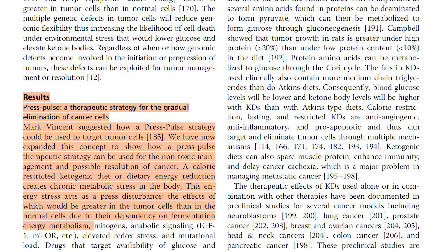Press Pulse: a therapeutic strategy for the gradual elimination of cancer cells. Mark Vincent suggested how a press pulse strategy could be used to target tumor cells. We have now expanded this concept to show how a press pulse therapeutic strategy can be used for the non-toxic management and possible resolution of cancer. A calorie-restricted ketogenic diet or dietary energy reduction creates chronic metabolic stress in the body. This energy stress acts as a press disturbance, the effects of which would be greater in the tumor cells than in the normal cells due to their dependency on fermentation energy metabolism.